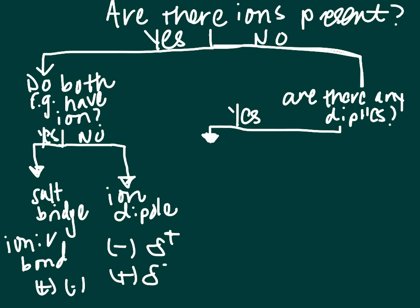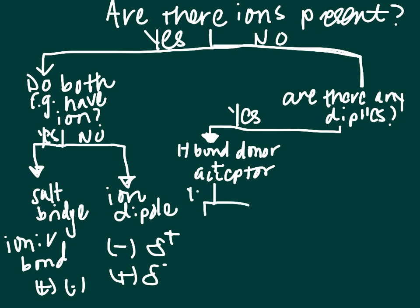If there are dipoles, the next question is: do you have an H-bond donor and acceptor? We will talk more about what this means. If the answer is yes, then you have an H-bond, or hydrogen bond. If the answer is no, then you just have a regular dipole-dipole interaction.